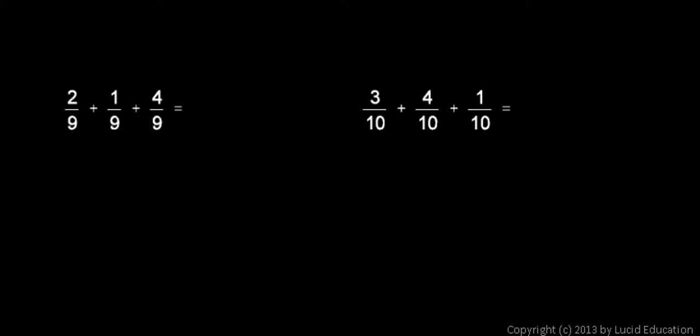But as long as the fractions are like fractions, as long as they have the same denominator, we can combine them, even if there are more than 2, like in these examples. Here we have 2 9ths plus 1 9th plus 4 9ths. So all of these fractions represent 9ths, and I have 2 9ths and 1 9th and 4 9ths. So my answer is just going to be, on the top is 2 plus 1 plus 4, and that adds up to 7. I have 7 9ths.